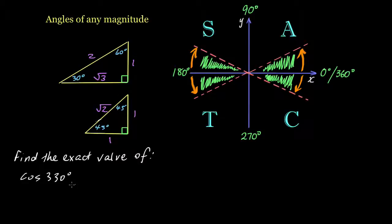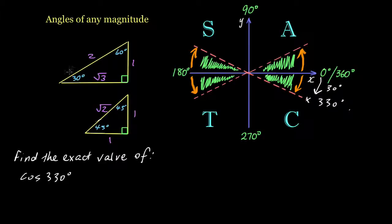Find the exact value of cos 330 degrees. 330 is just past 270 but not as far as 360. That line represents 330 degrees, and we're 30 degrees short of the horizontal line, so the reference angle is 30 degrees. Cos is adjacent over hypotenuse, giving root 3 over 2. We're in the fourth quadrant where cos is always positive, so cos 330 equals square root of 3 over 2.